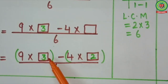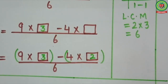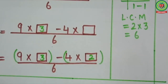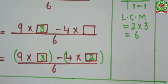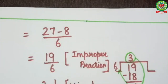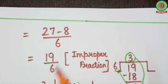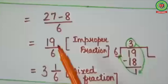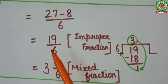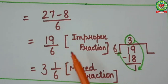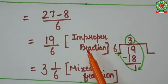Now first multiply, then subtract. 9 threes are 27, and 4 twos are 8. So we will write 27 minus 8 upon 6. 27 minus 8 equals 19. So the answer is 19 upon 6. As you can see, numerator is greater than denominator, so it is an improper fraction.